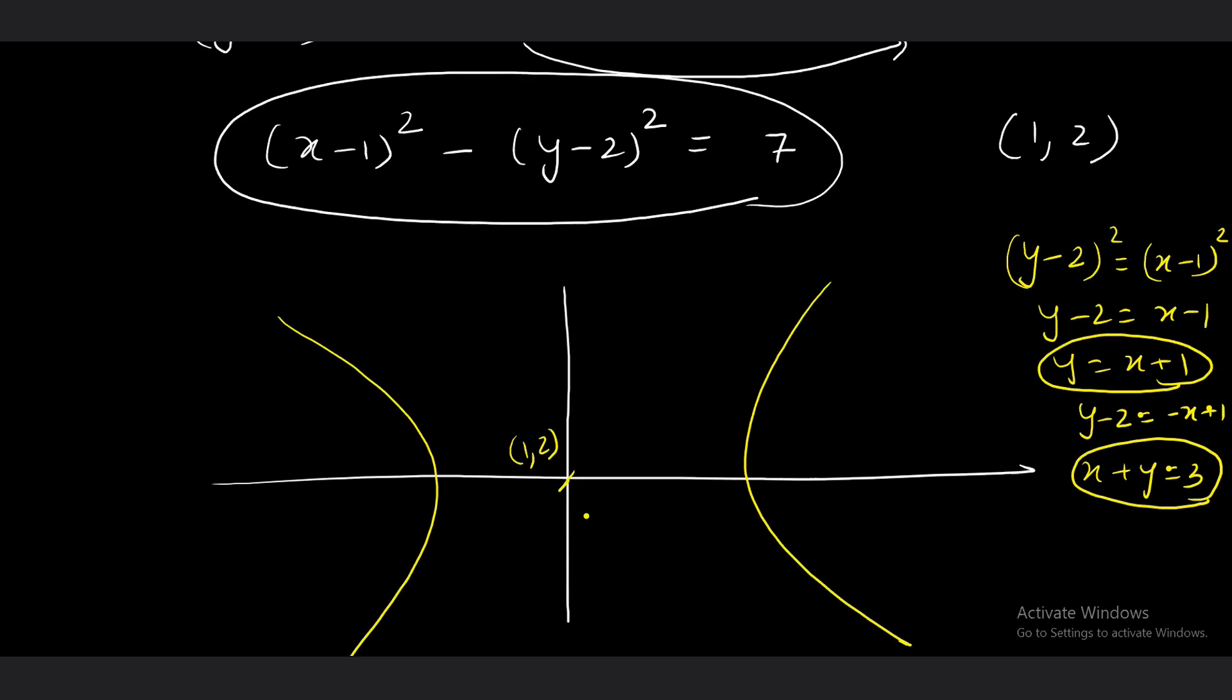So, basically they are saying that find the area of a triangle formed by three sides where the two sides are nothing but the asymptotes of given hyperbola. So, I am just tracing the given hyperbola's asymptotes.